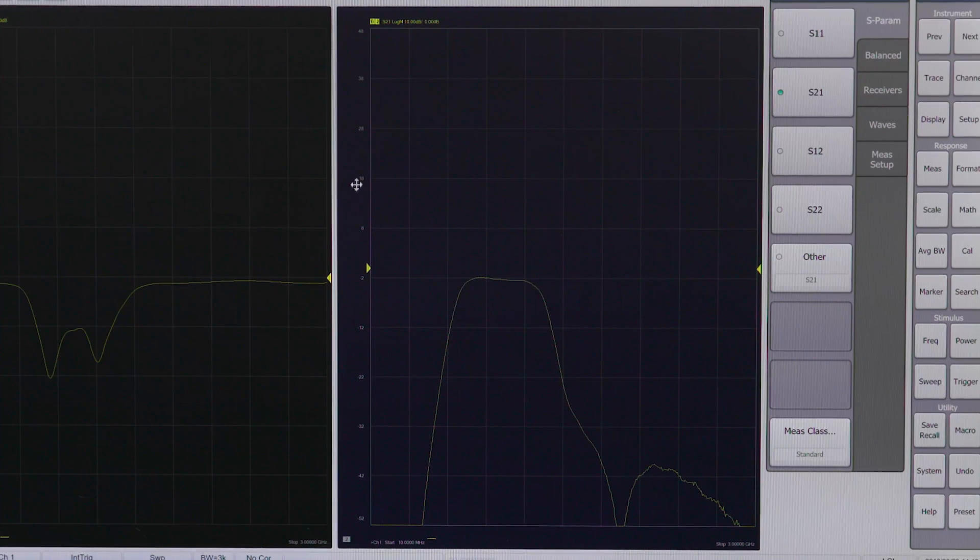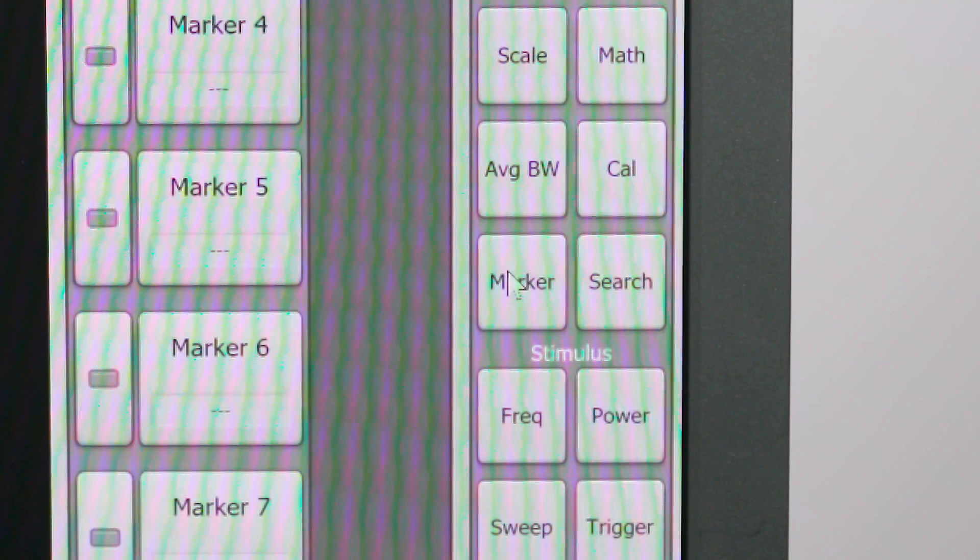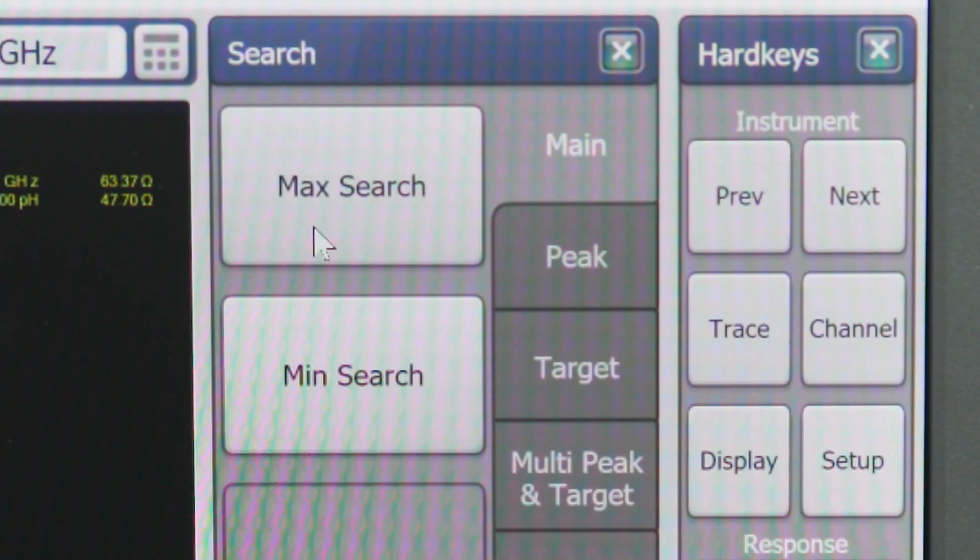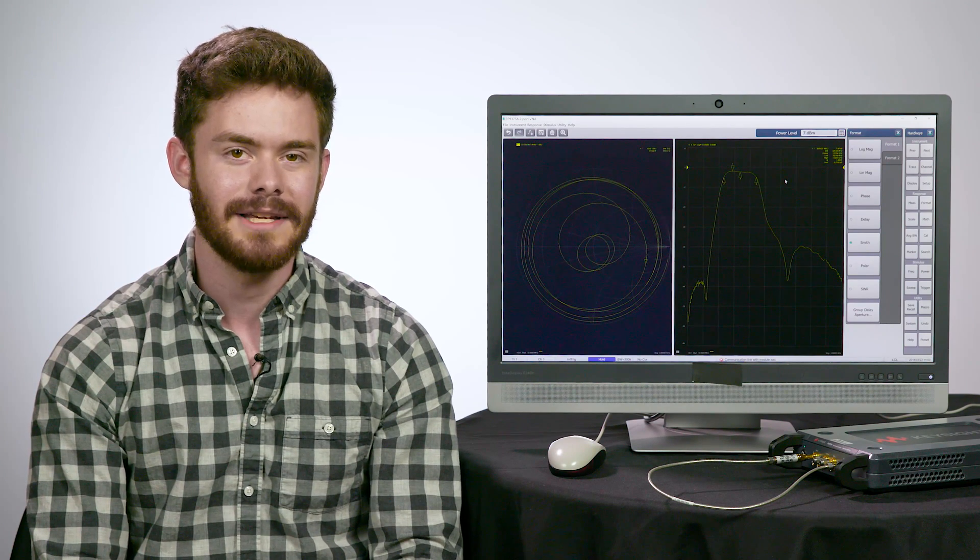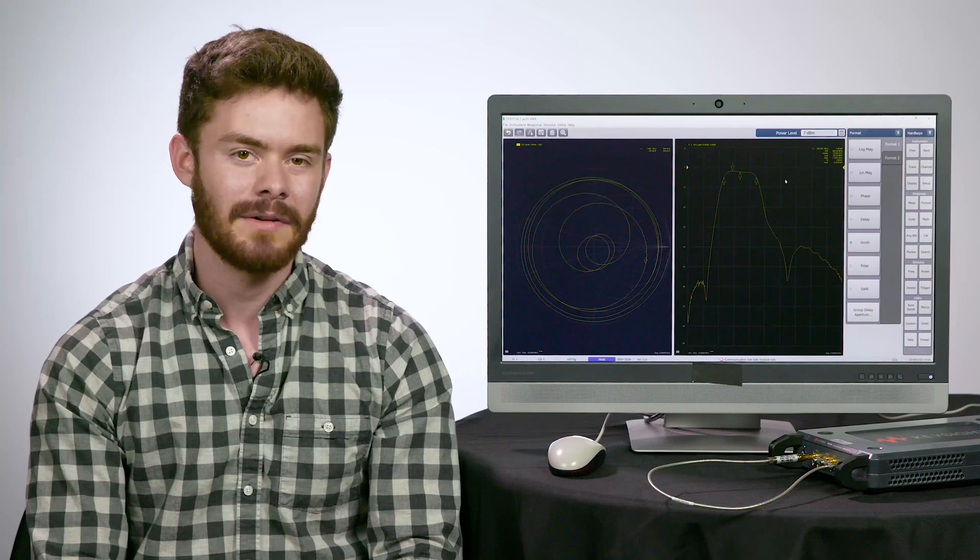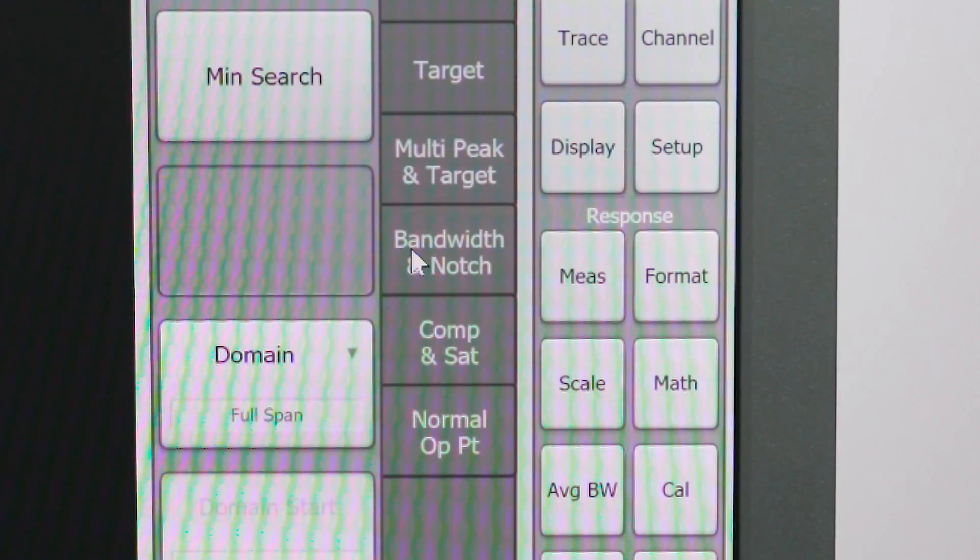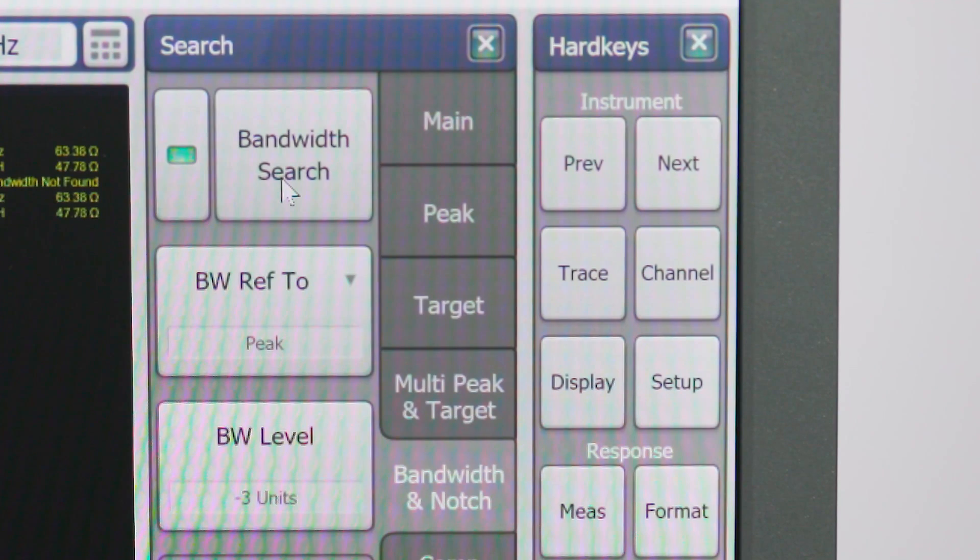Let's rescale this S21 signal to see more detail by dragging the reference marker on the Y axis up to show the entire response on screen. Using a marker on this trace, I can measure the maximum power of the trace. Using the marker and max search functions, I find the max value is about minus 1.6 dB, which means we have about minus 1.6 dB insertion loss. We can also easily analyze the bandwidth of this bandpass filter we're testing by pressing Select and Bandwidth and Notch. Just press Bandwidth Search to analyze the bandwidth.